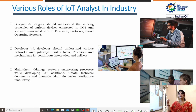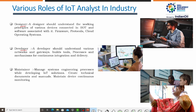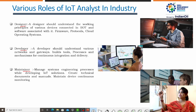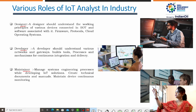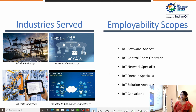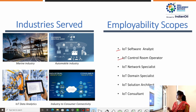Once the student has been trained, they will play different roles in an industry — as a designer, developer, or maintainer. When acting as designer, they should know the working principle of all devices connected to IoT. As a developer, they should know various networks and gateways required for maintaining IoT, and it is also required to build tools, processes, and mechanisms for continuous integration and delivery. As a maintainer, they have to manage the system engineering process while developing the IoT solution. Students can apply for different job roles such as IoT Software Analyst, IoT Control Room Operator, IoT Network Specialist, IoT Domain Specialist, IoT Solution Architect, or IoT Consultant.